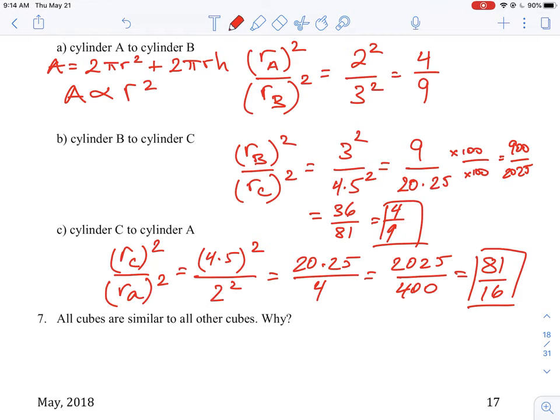All right, so that's how those questions go together. You have to use the property that area is proportional to the square of the radius. So that will give you a way to generate the ratio of the areas without actually having to go and calculate them.